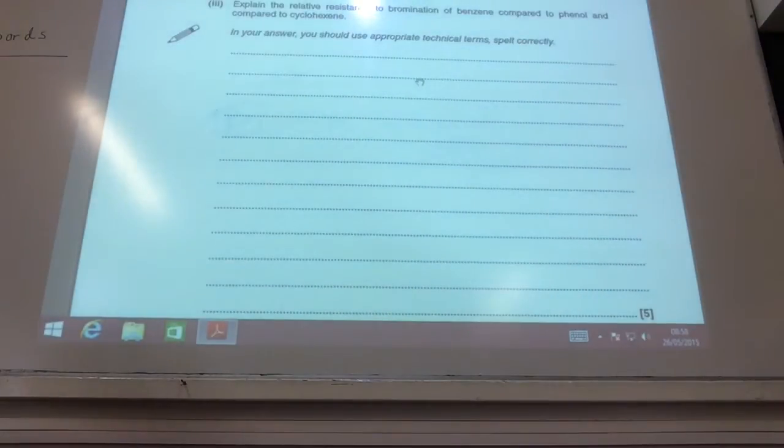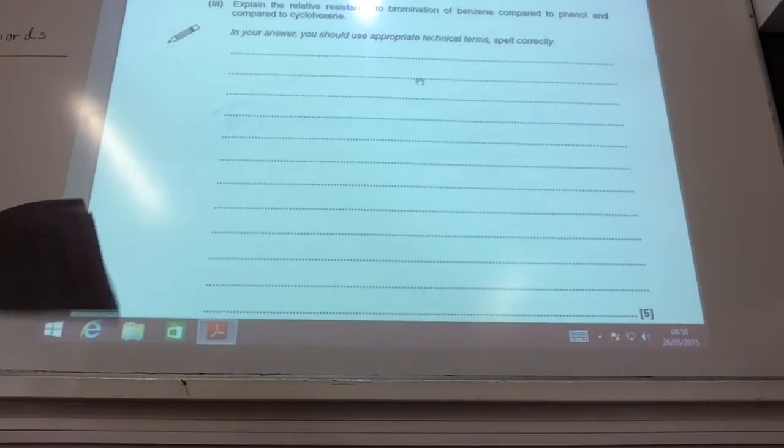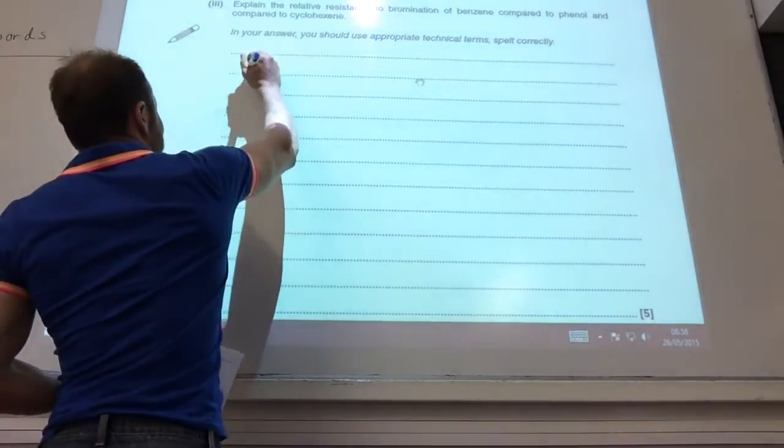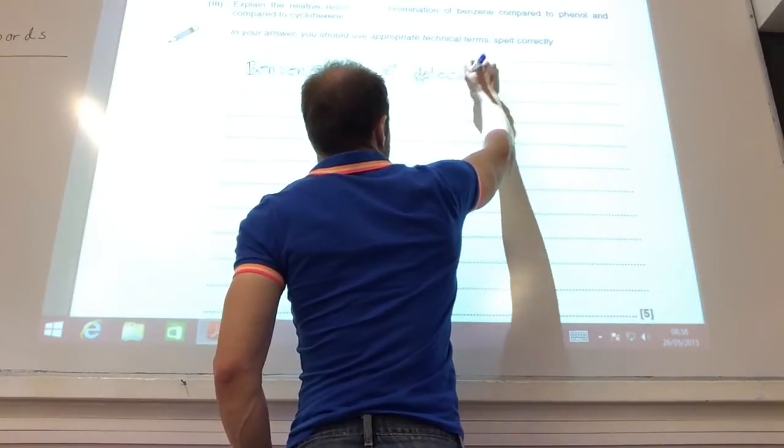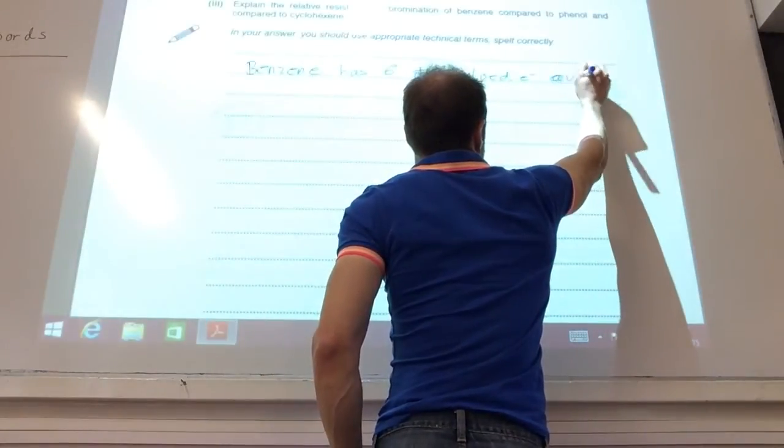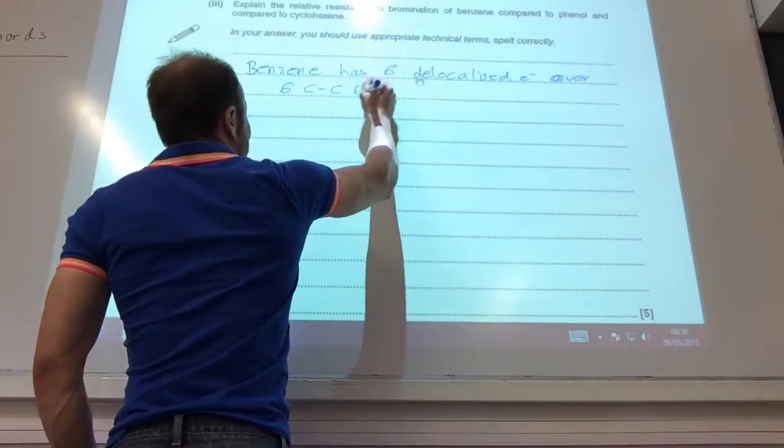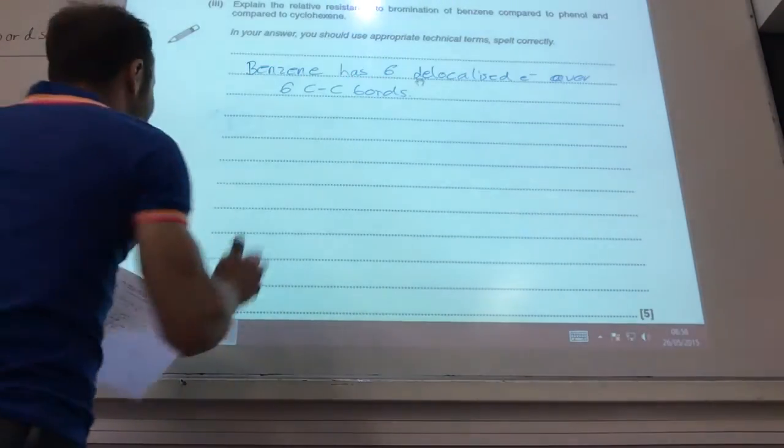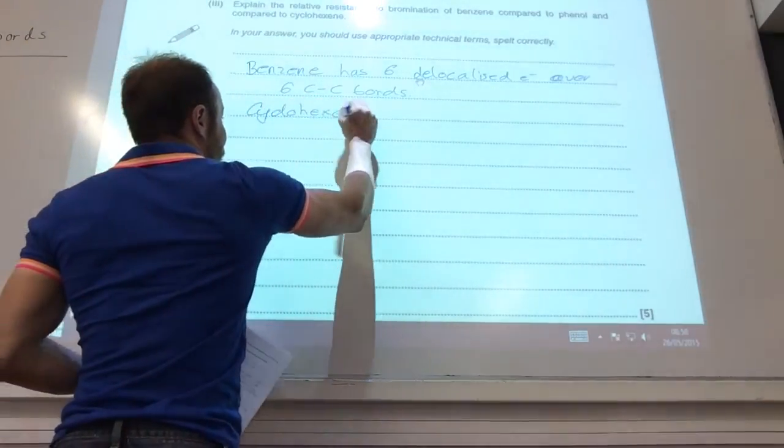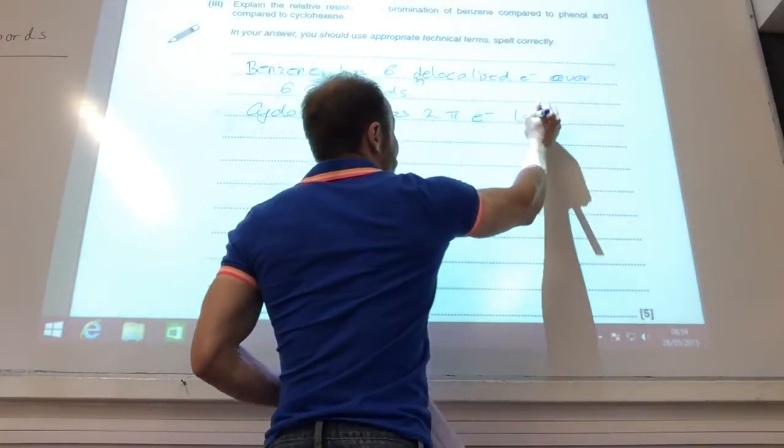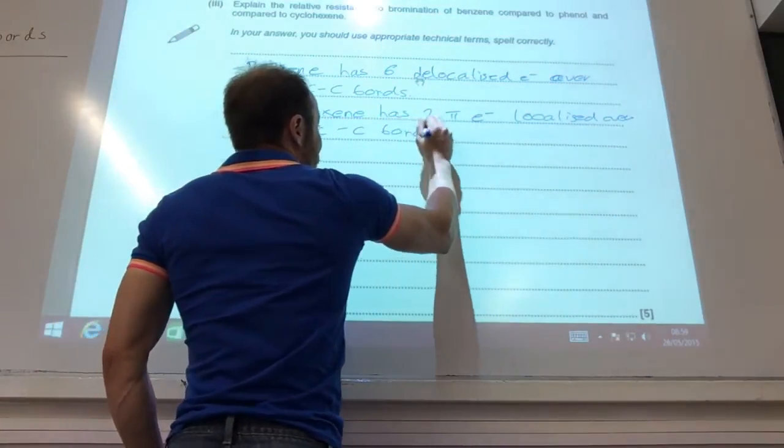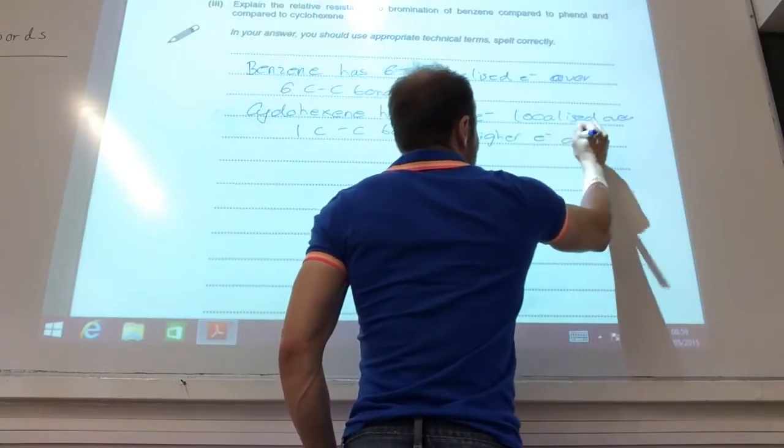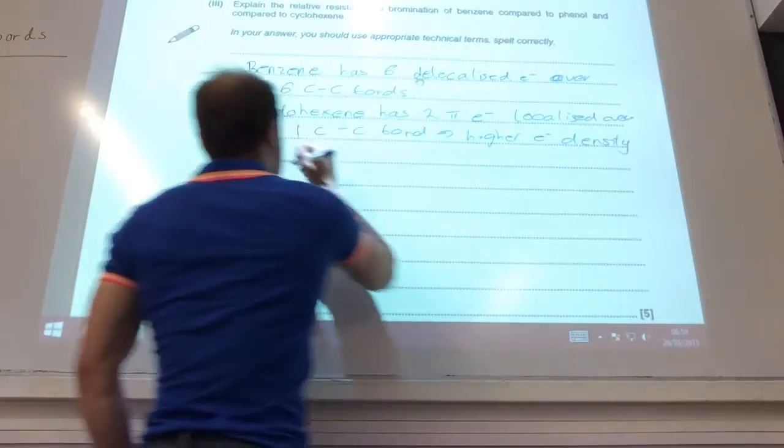Right, so we now need to explain the relative resistance to bromination of benzene compared to phenol and also compared to cyclohexene. The first thing to remember is benzene has six delocalized electrons over six carbon-carbon bonds. Cyclohexene has two pi electrons localized over one carbon-carbon bond, and therefore higher electron density than benzene.